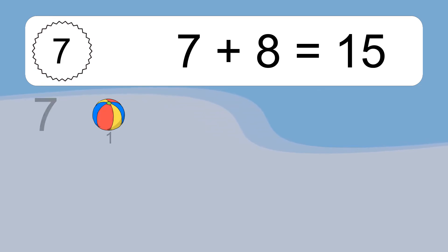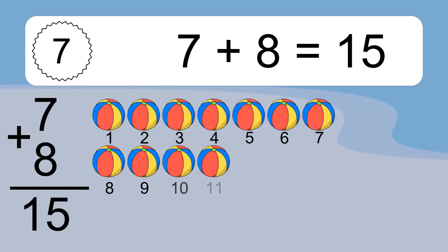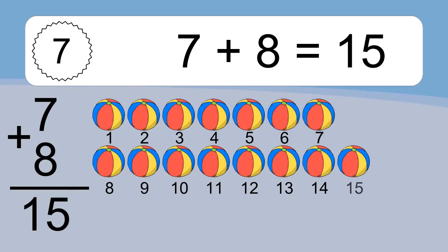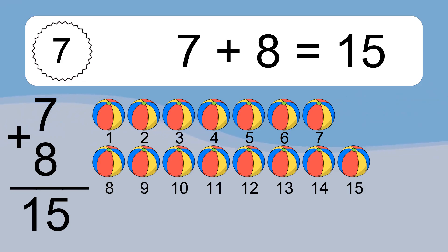7 plus 8 equals what? 7 plus 8 equals 15. Let's count it: 1, 2, 3, 4, 5, 6, 7, 8, 9, 10, 11, 12, 13, 14, 15.